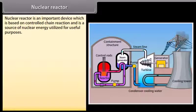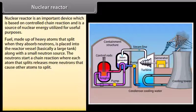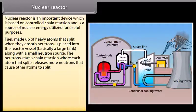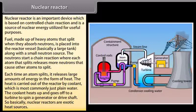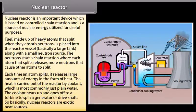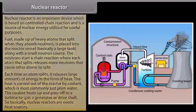Nuclear reactor. Nuclear reactor is an important device which is based on controlled chain reaction and is a source of nuclear energy utilized for useful purposes. Fuel made up of heavy atoms that split when they absorb neutrons is placed into the reactor vessel, basically a large tank, along with a small neutron source. The neutrons start a chain reaction where each atom that splits releases more neutrons than cause other atoms to split. Each time an atom splits, it releases large amount of energy in the form of heat. The heat is carried out of the reactor by coolant, which is most commonly just plain water. The coolant heats up and goes off to a turbine to spin a generator or drive shaft. So basically, nuclear reactors are exotic heat sources.